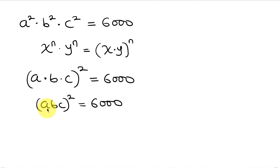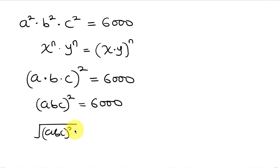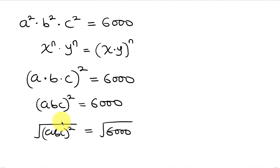To find abc, we take the square root of both sides. Taking the square root of (abc) squared, focusing on the positive square root, the square root cancels the square, leaving abc equal to the square root of 6000.